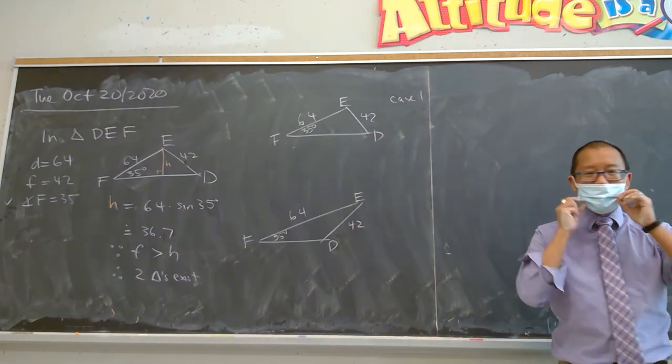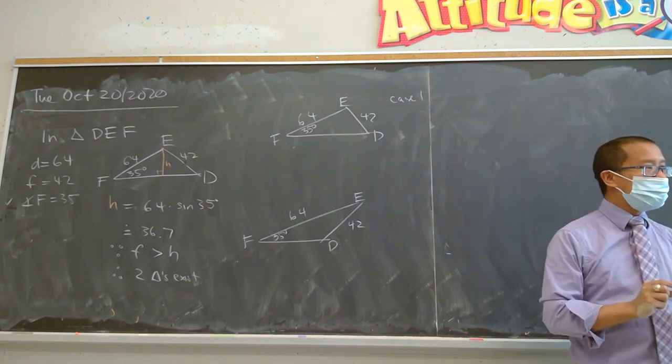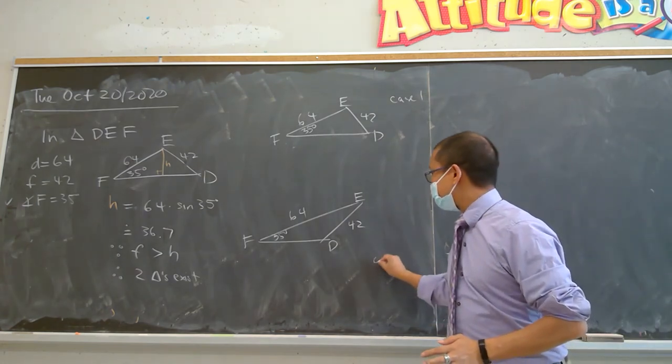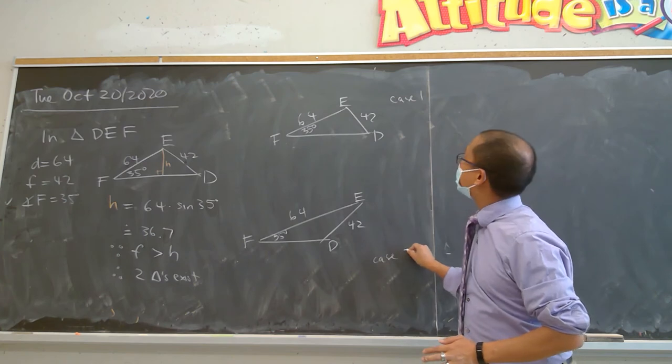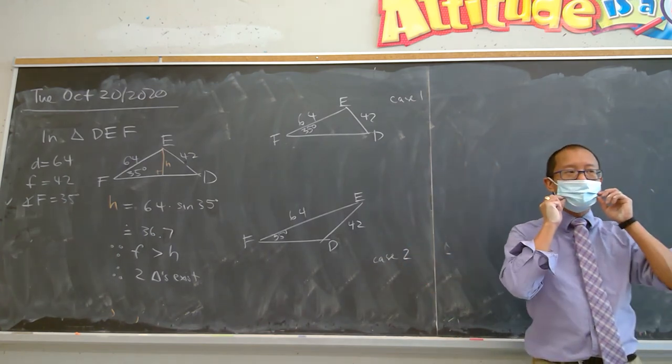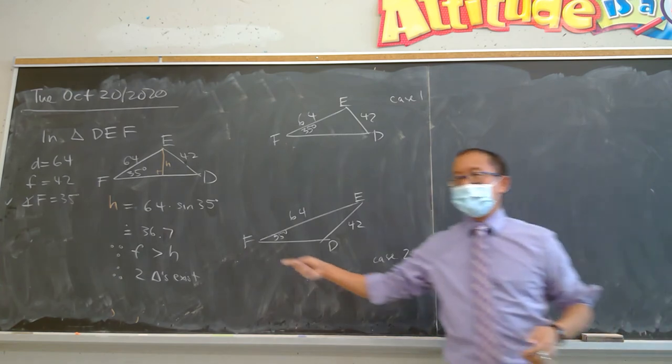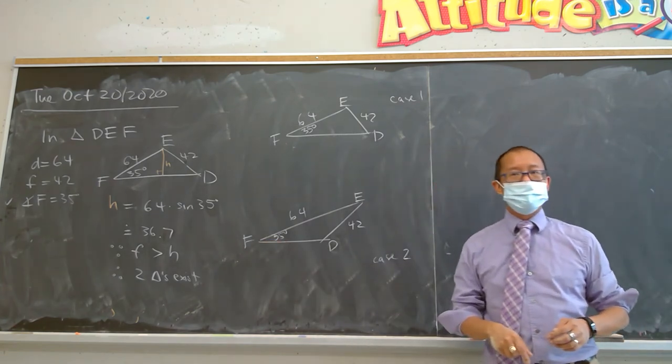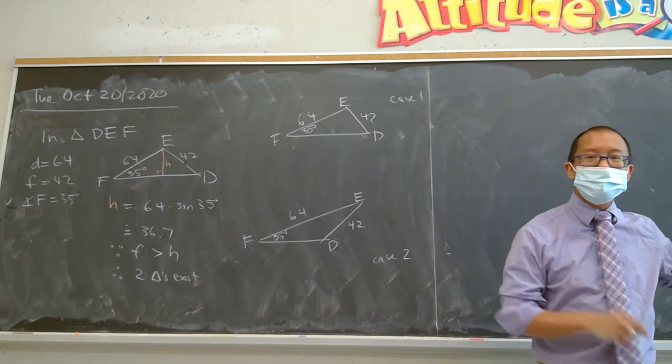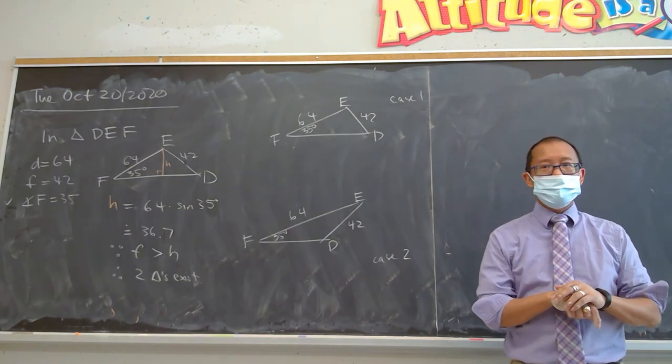That's 42. And when they ask you to solve the triangle, they're asking you to find everything, right? All the angles and all the sides. Let's just pause right now. Anyone from the class would like to ask me to clarify how we do these two triangles? This is actually the case 3 of understanding the ambiguous cases.